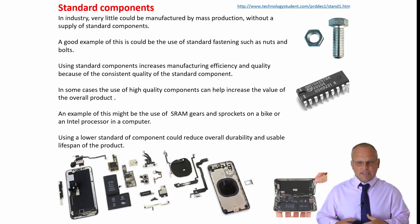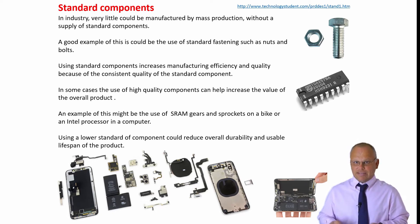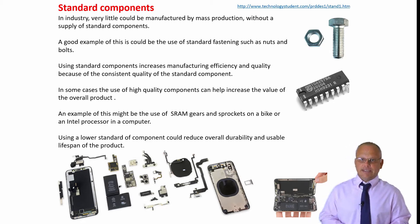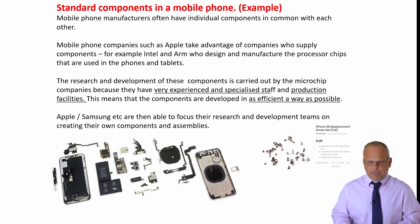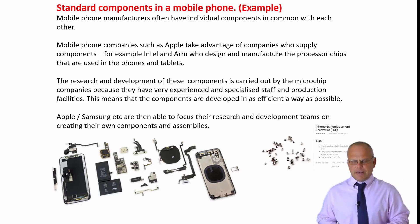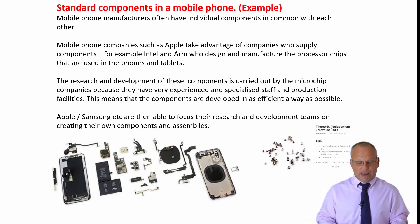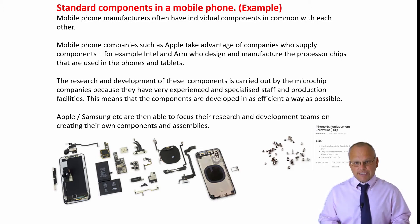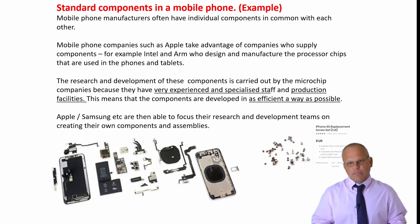If we're trying to increase the life cycle or overall durability of a product, having a better-quality standard component increases the chances of success. A mobile phone is a great example — there are lots of companies that make phones, and the price range between them is partly about branding, and partly about really good components such as the camera lenses, battery type, or processor type.